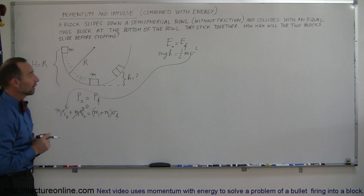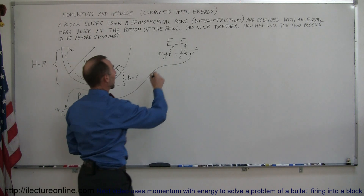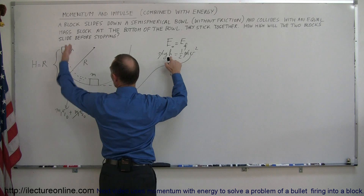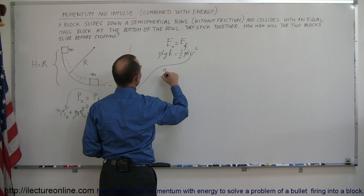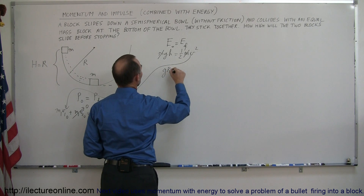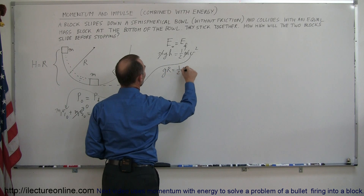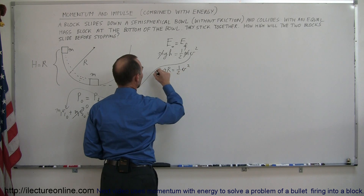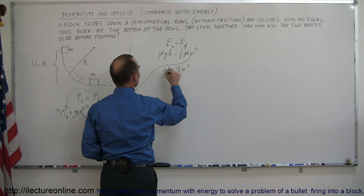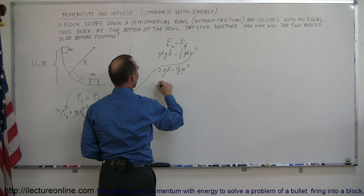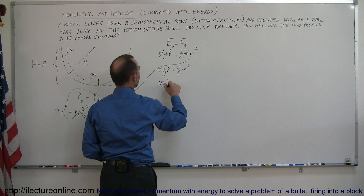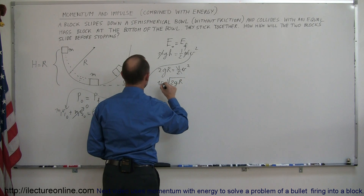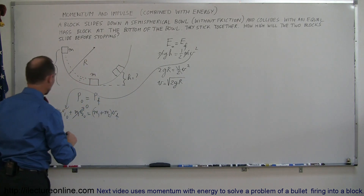Let's solve for v. We have m on both sides, and h is the radius of the bowl, so we have g times r equals one-half times v squared. Solving for v, we multiply both sides by 2 and take the square root, so v equals the square root of 2gr.